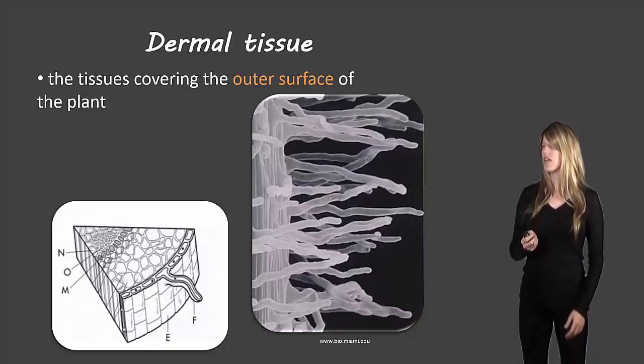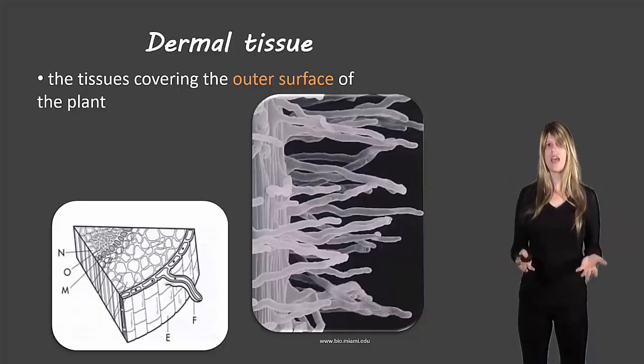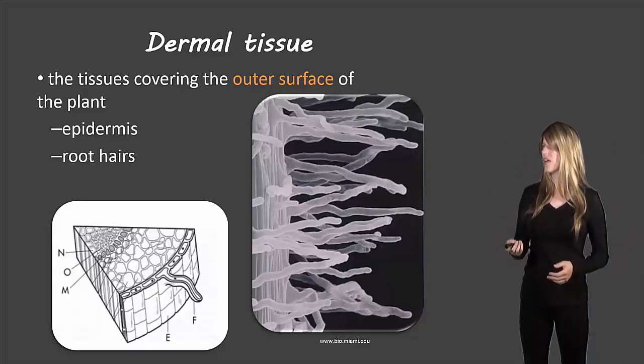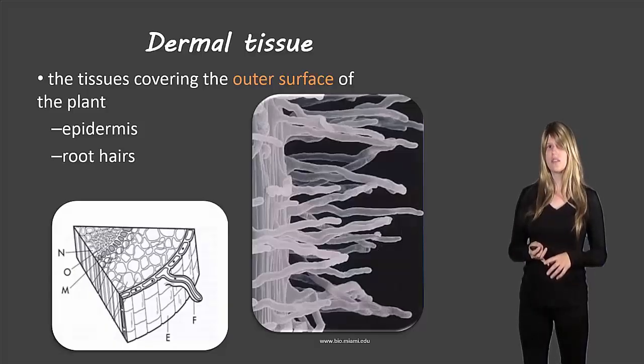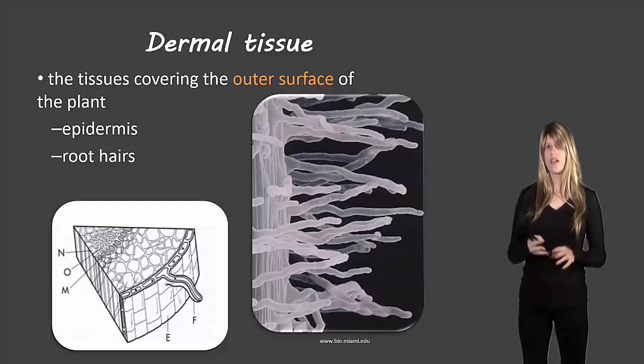So let's start off with the dermal tissue. These are all the tissues that are covering the outside of the plant, and that would include the epidermis, which is the main part covering the outside of the plant, and root hairs which stick out from the roots.